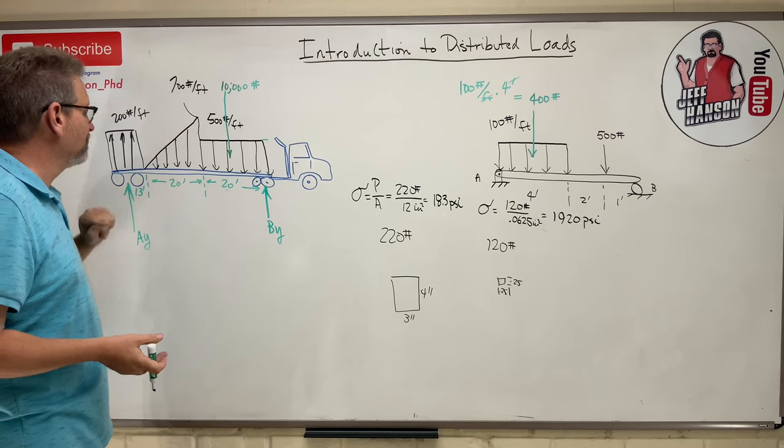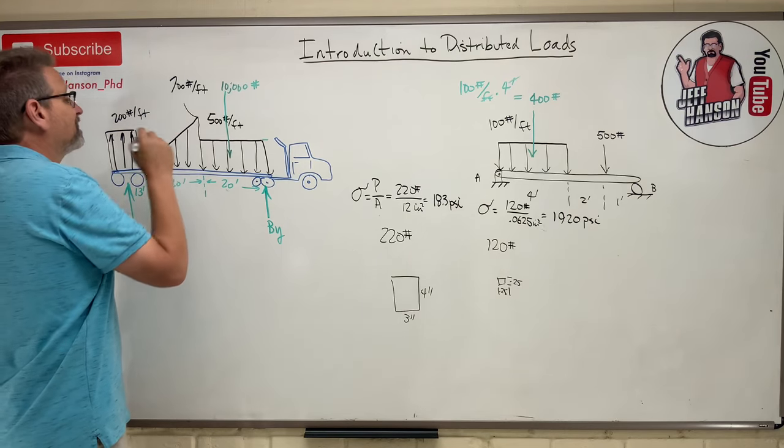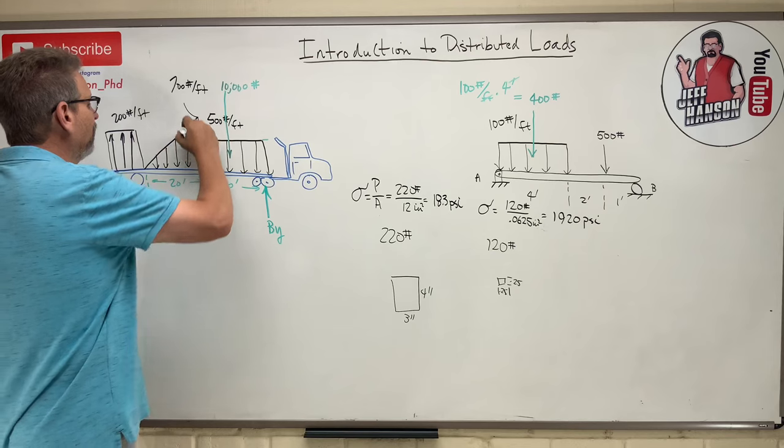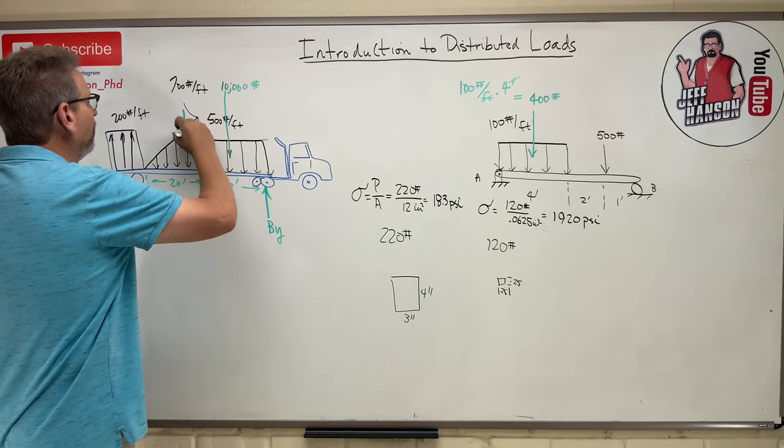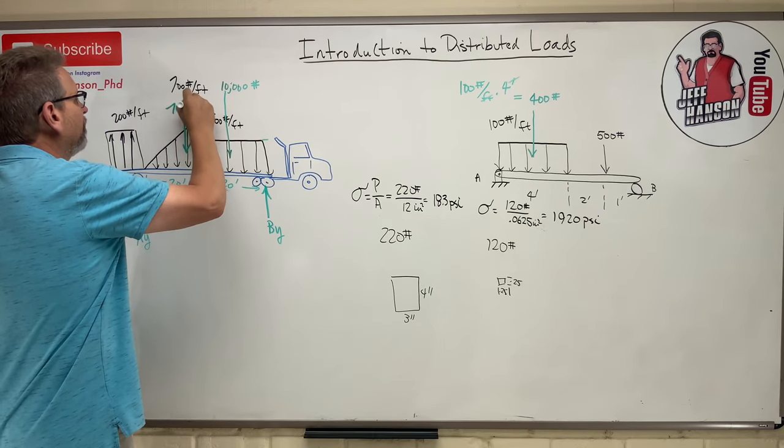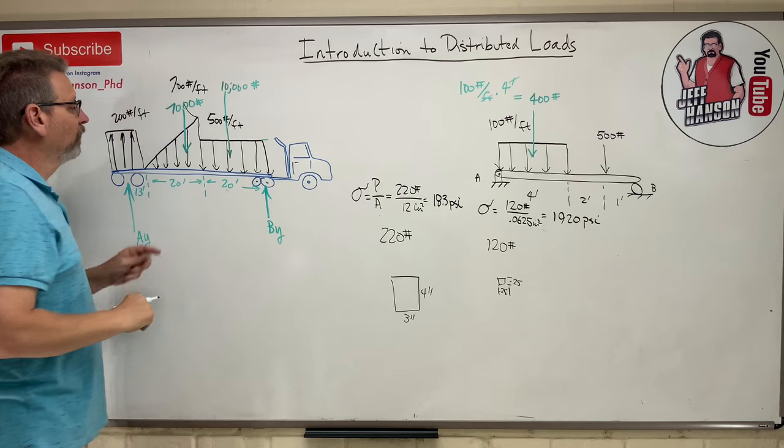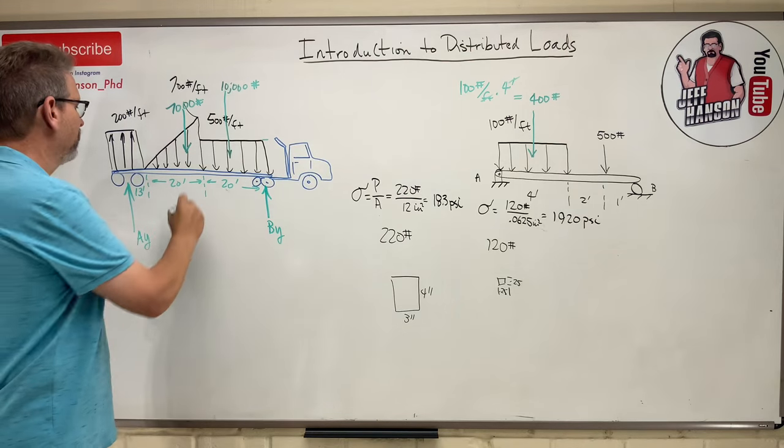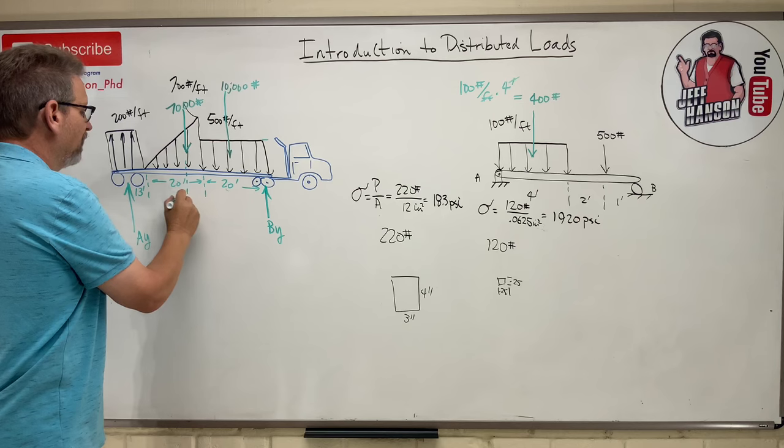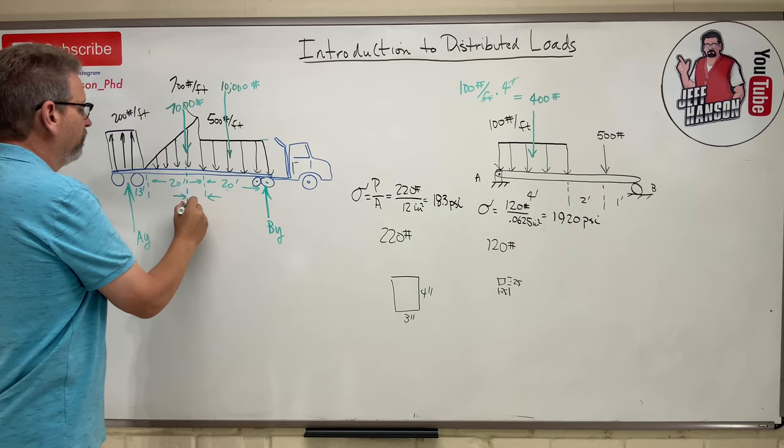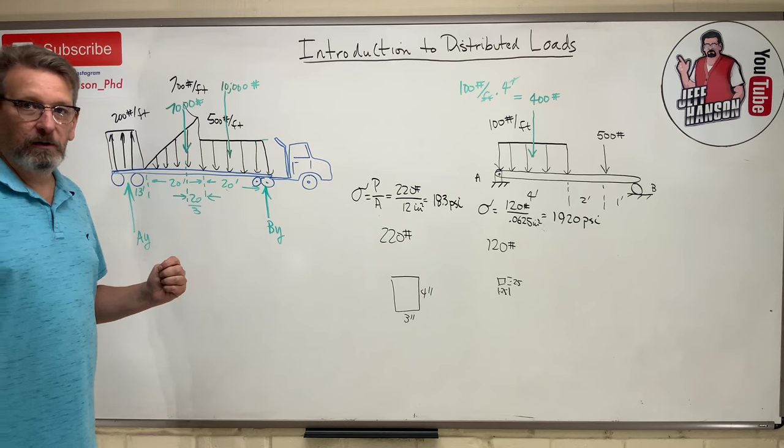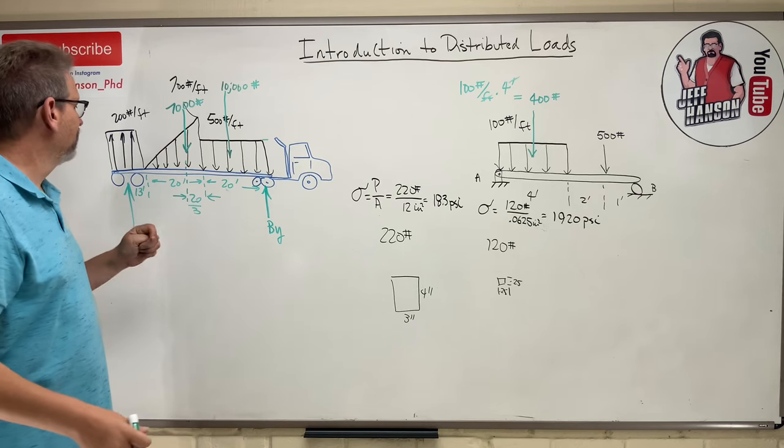This area here is 700 tall by 20, but it's a triangle. So I'm going to treat it like an area. I've got to divide that by two. So that would be like 700 times 10, which would be 7,000. And where would you put that 7,000 pounds? Well, I put it like right there. Why right there? Well, it's at one third the base of the triangle, right? So this distance right here would be 20 over three. That's centroid stuff, isn't it?